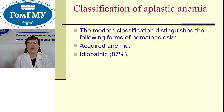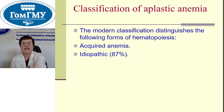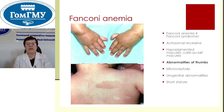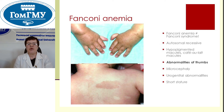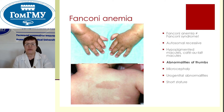Aplastic anemia can be acquired idiopathic in 87% of cases, or Fanconi anemia. On this picture you can see abnormalities in Fanconi anemia — abnormalities of the thumbs, microcephaly, orogenital abnormalities, and short stature of persons with Fanconi anemia.